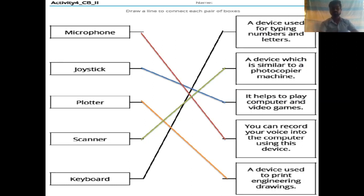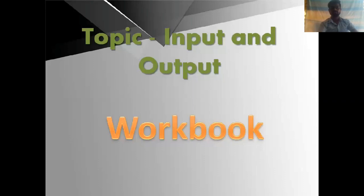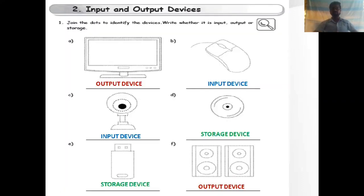The next one is the workbook and you have to identify the devices as input device, output device, or storage device. First one is monitor. Monitor is an output device. B, mouse. Mouse is an input device.